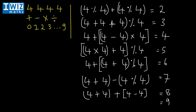Now in order to get to nine, nine can be seen as eight plus one. So four plus four gives eight, and four divided by four gives one. So eight plus one gives nine.